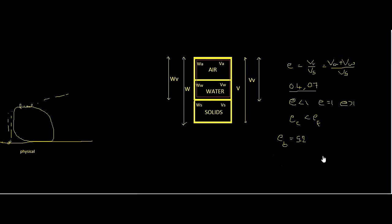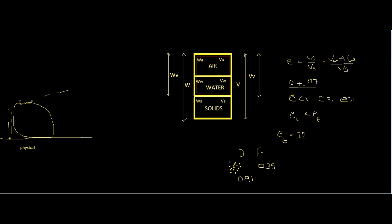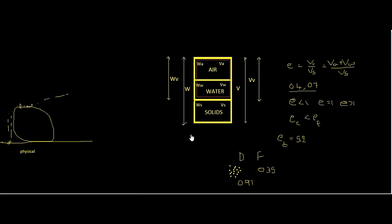As seen with bentonite clay, fine-grained soils tend to have higher void ratios than coarse-grained soils. The void ratio also depends on the type of packing. There are two main types: densely packed and loosely packed. When spherical grains are arranged in a cubic pattern, that is not the densest packing and the void ratio is about 0.35. When arranged diagonally in the densest packing, the void ratio can go as high as 0.91. We'll look at porosity and other volumetric relationships in the next video.